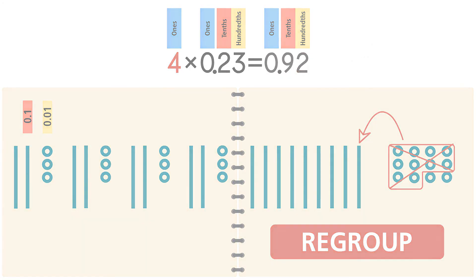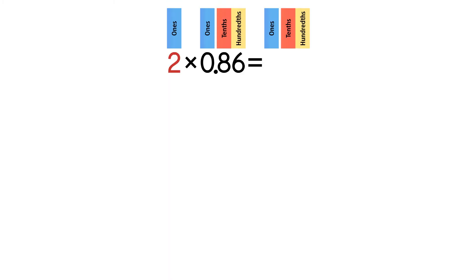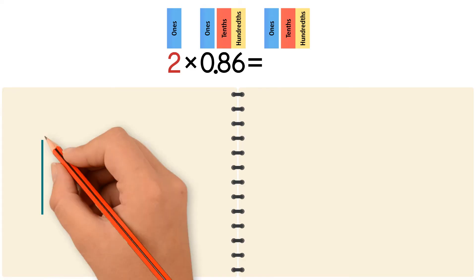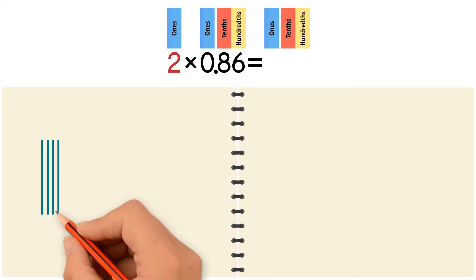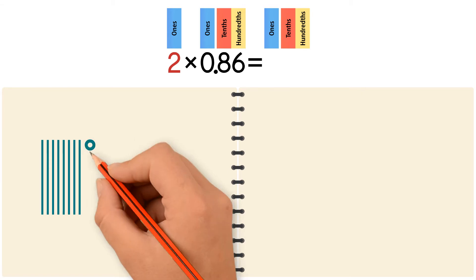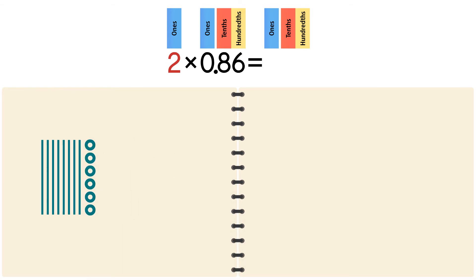Let's do another example: two times 86 hundredths. Let's draw it out. To draw 86 hundredths, we need 8 bars to represent 8 tenths and 6 circles to represent 6 hundredths. Because we're multiplying by 2, we have to do this 2 times.